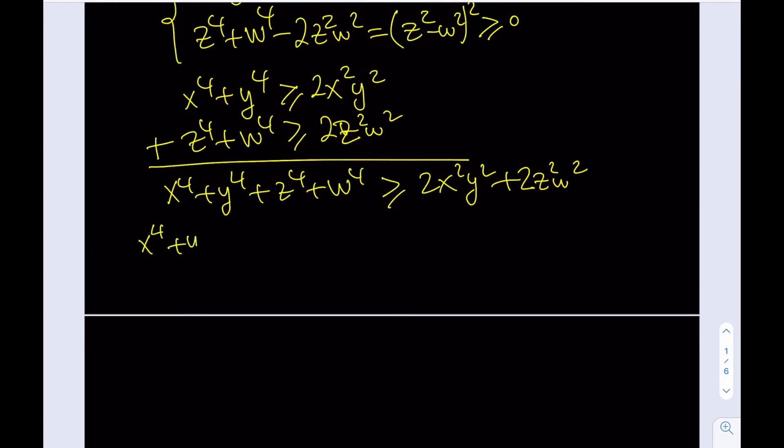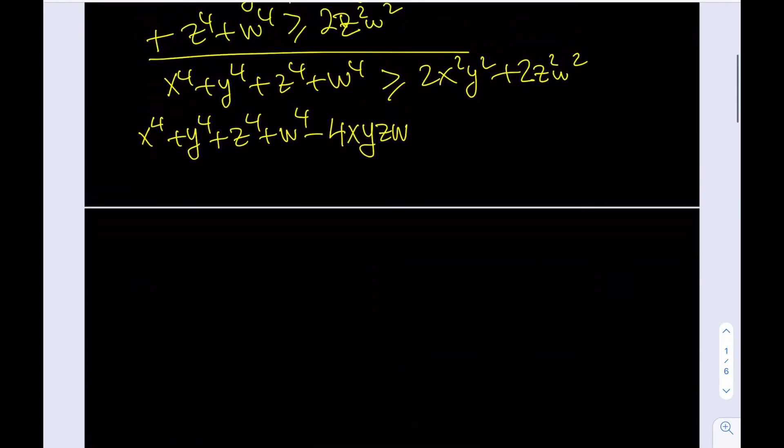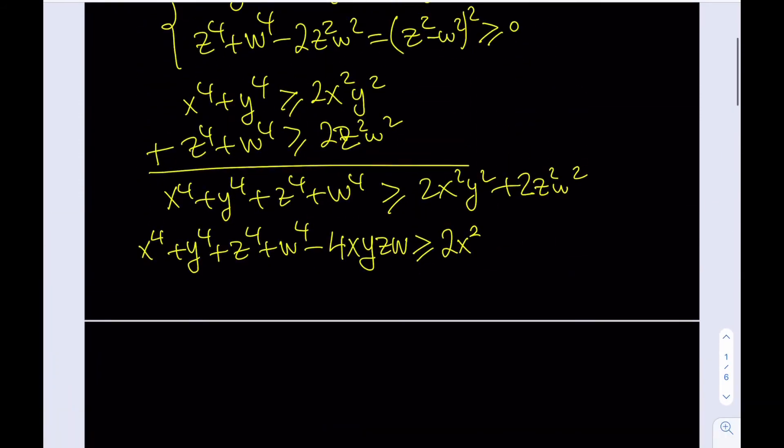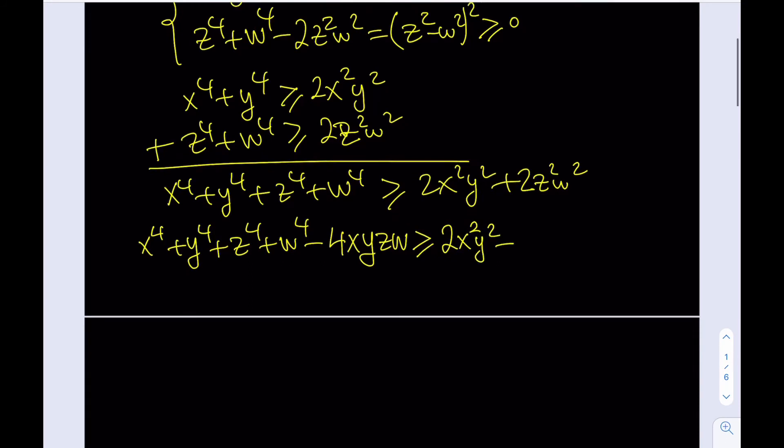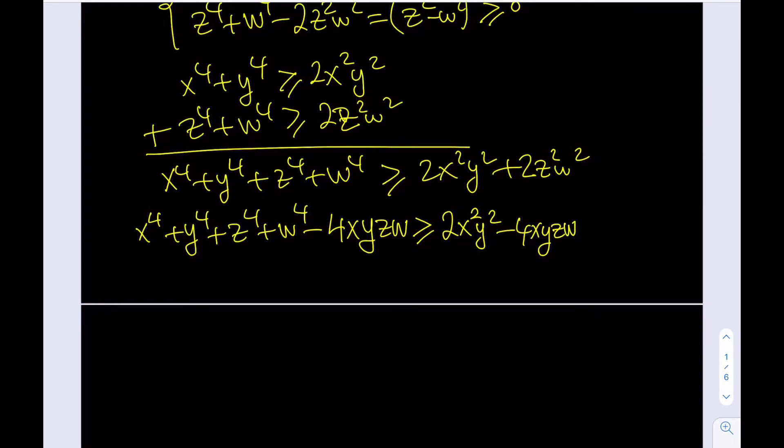I'm going to write this expression again. But this time I'll be subtracting 4xyzw from both sides and you'll notice that it's actually helpful because what I have is on the right hand side. So let's do the same thing on the right hand side and you'll understand what I'm doing. 2x squared y squared minus 4xyzw plus 2z squared w squared.